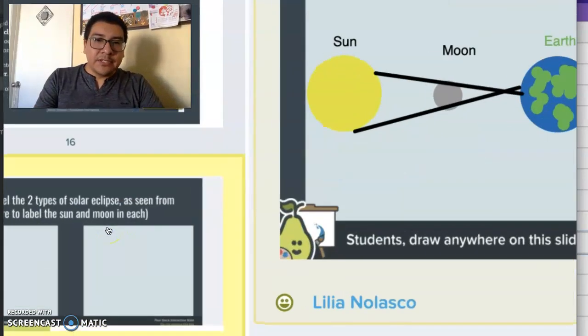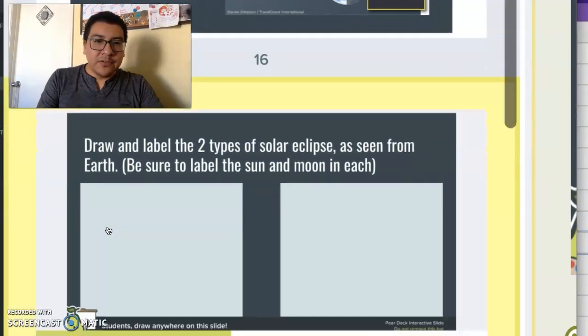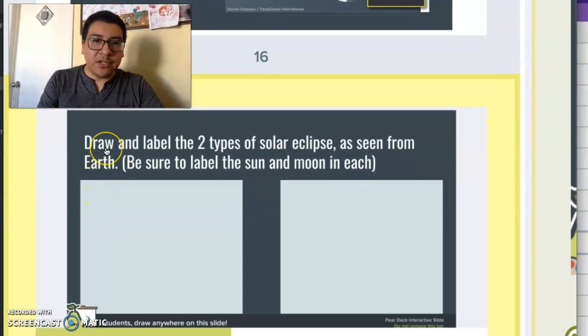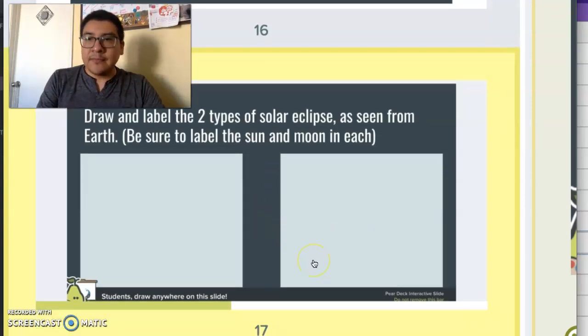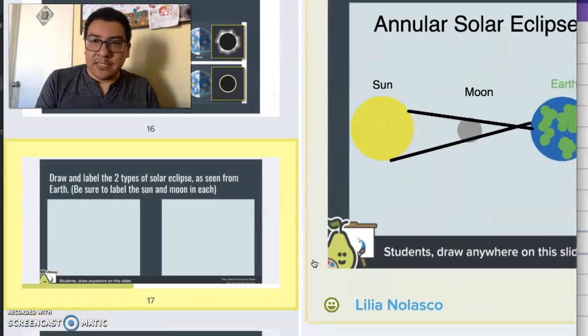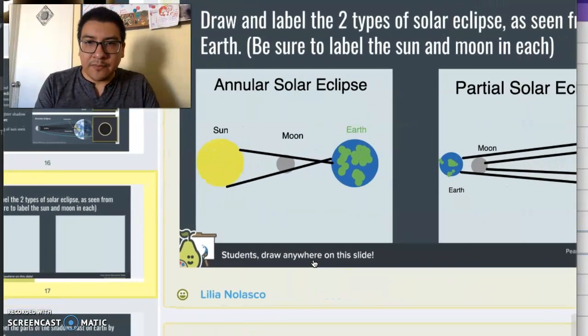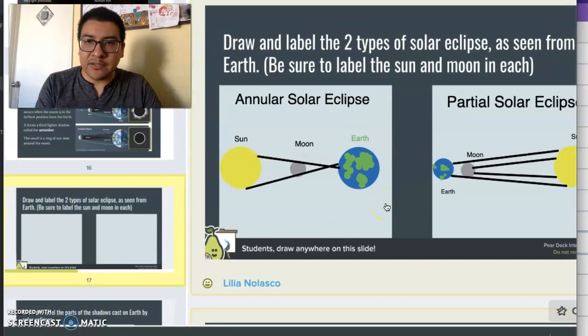So what I want the students to do is take a few minutes to draw and label two types of solar eclipse as seen from Earth. This is what we see in the sky when we look up. And because I already did this lecture part, these are some of the responses that the students provided.